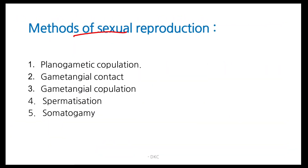Methods of SR in fungi. There are five methods: planogametic copulation, gametangial contact, gametangial copulation, spermatization, and somatogamy.